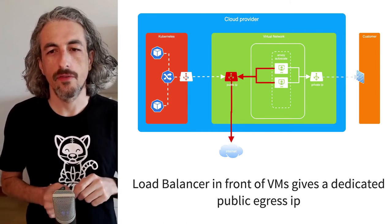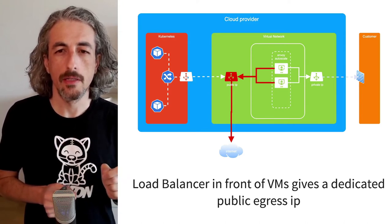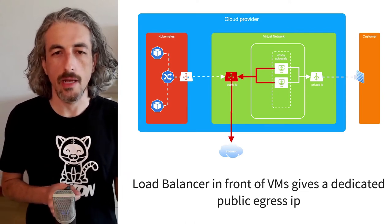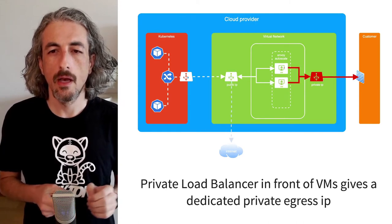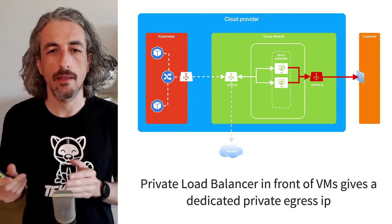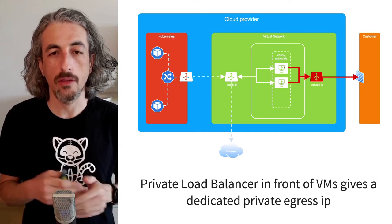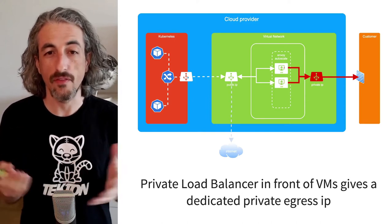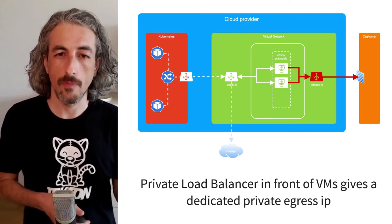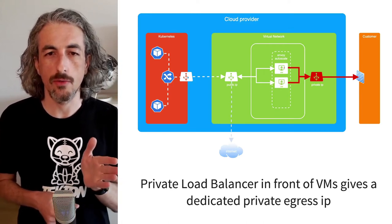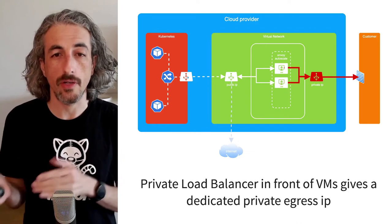The load balancer in front of the virtual machines gives a dedicated public egress IP to traffic going out of Envoy. Once traffic is on the virtual machines, it can go out to the internet with its own dedicated IP — something we already had in the previous version. We also have a private load balancer connected to the customer-side network. All traffic coming from Envoy into the customer network — with whatever connectivity option the cloud provider has — gets a dedicated private egress IP. So the public load balancer gives a dedicated public IP for internet traffic, and this private load balancer gives a dedicated private IP for traffic going into the customer's private network.